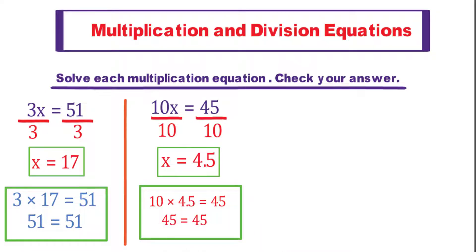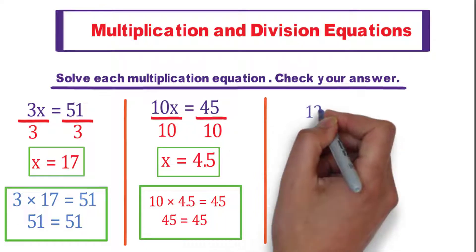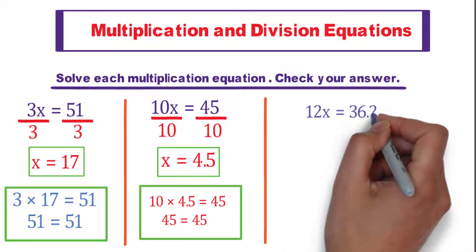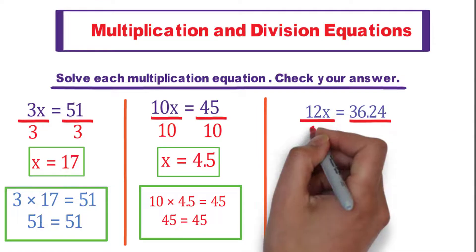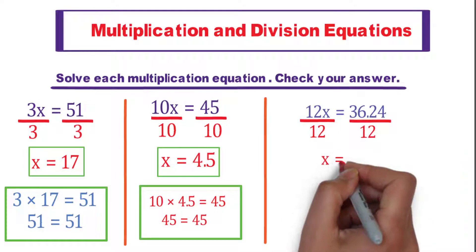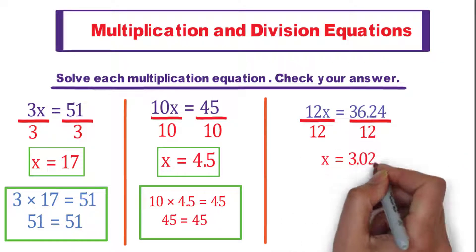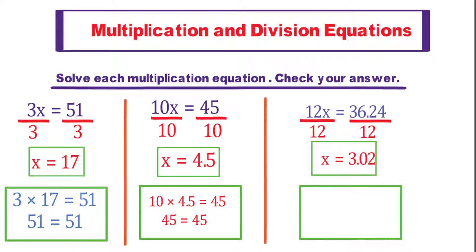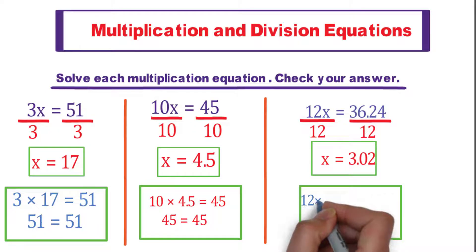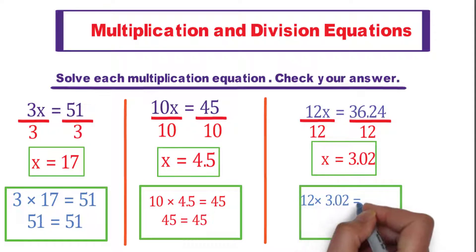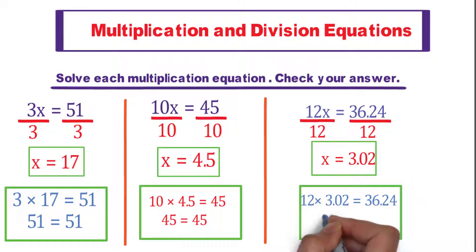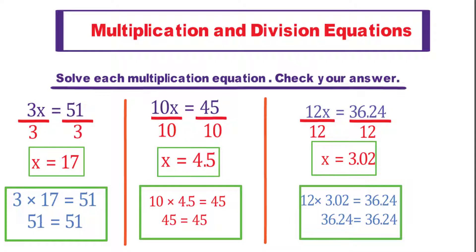Next: 12x equals 36.24. Divide both sides by the coefficient of x, which is 12. We get x equals 3.02. To check your answer, substitute in the given equation: 12 times 3.02 equals 36.24. Now 36.24 equals 36.24, so the value of x is true.